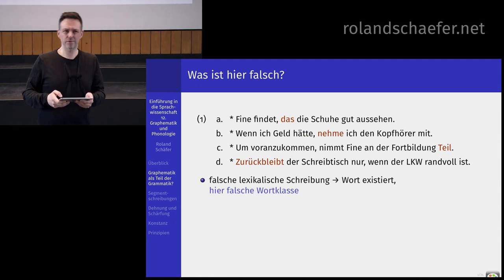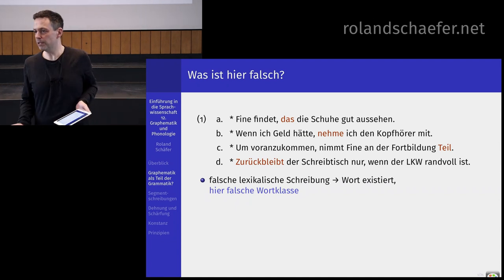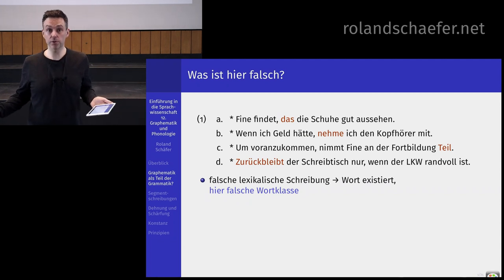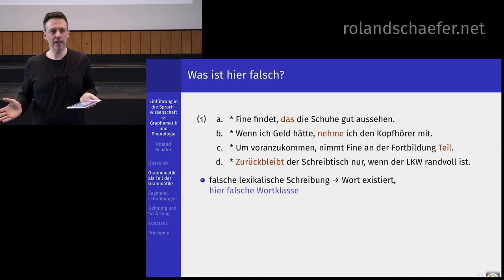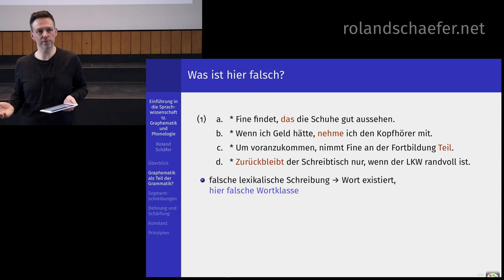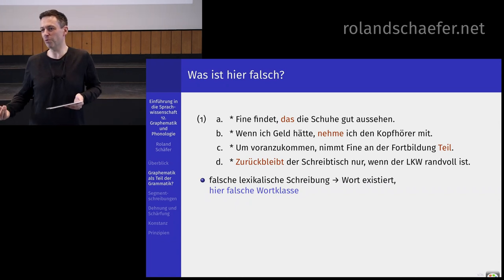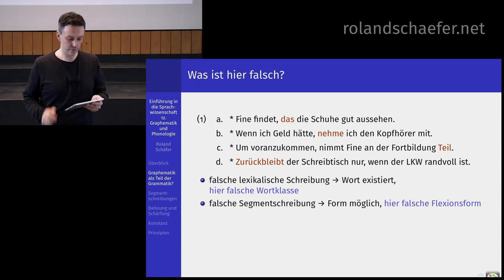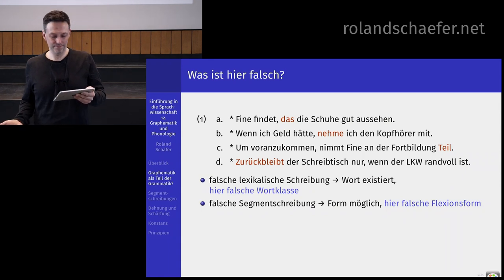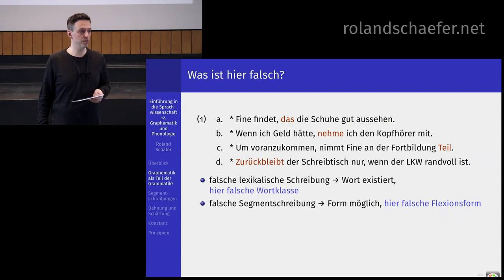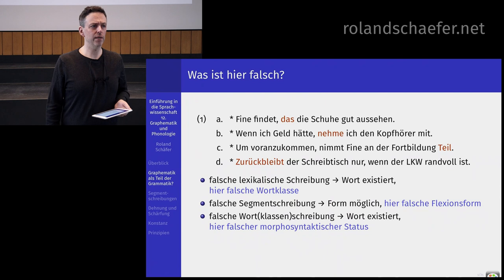Hier ist jeweils irgendwie was nicht in Ordnung. Im ersten Beispiel haben wir das 'Das' – das ist eine falsche lexikalische Schreibung. Wir schreiben aus irgendwelchen Gründen die Subjunktion 'dass' mit Doppel-S und das Relativpronomen mit einfachem S. Das folgt eigentlich aus nichts. Beim zweiten Beispiel sehen Sie eine falsche Segmentschreibung – da müsste ein Ä sein für 'nähme'. Das ist hier die falsche Flexionsform oder jemand kann die Differenzierung zwischen E und Ä nicht.